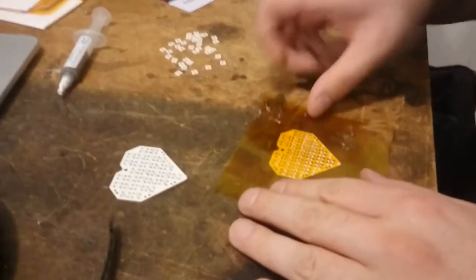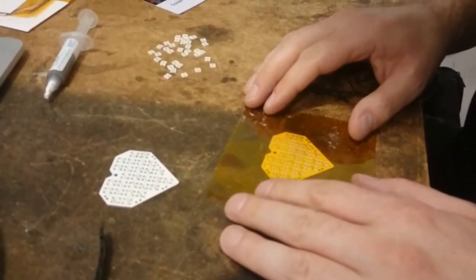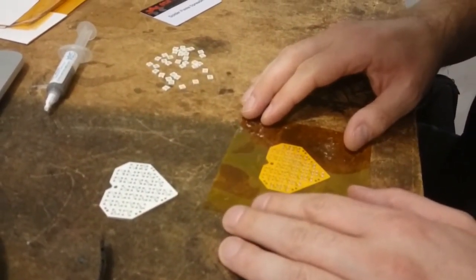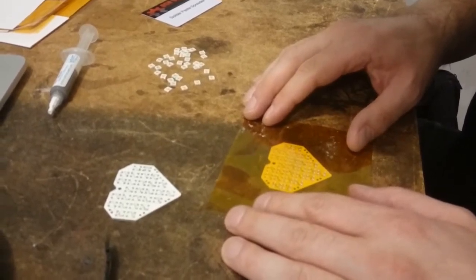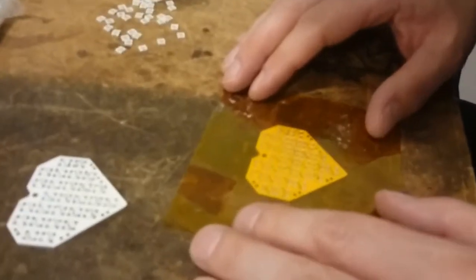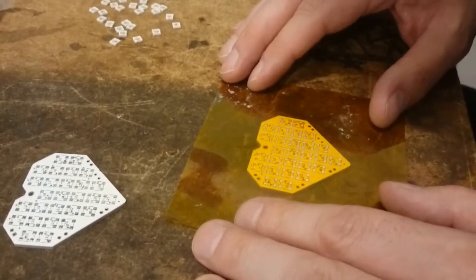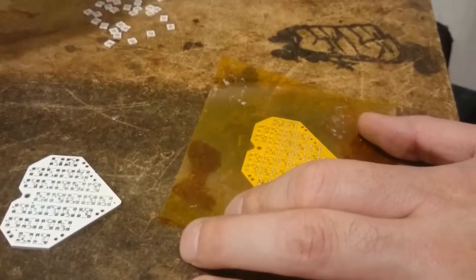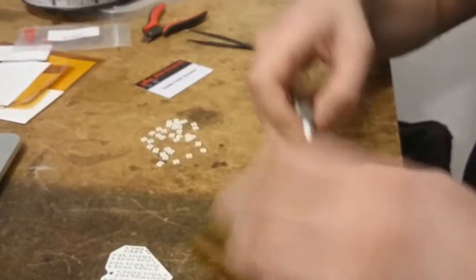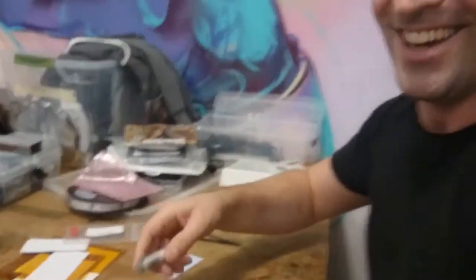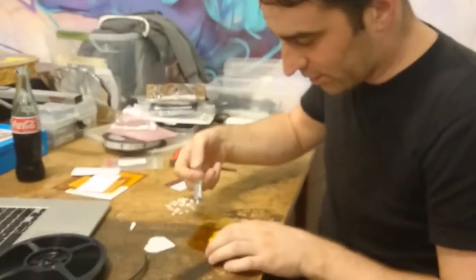Step one is to align the stencil on the circuit board, basically a matter of moving it until you can see silver through all the little holes and not white solder mask. Actually, that was step two. Step one is take the top off the solder paste syringe and put a whole lot of them over the stencil. It's probably enough for multiple boards, so fingers crossed.